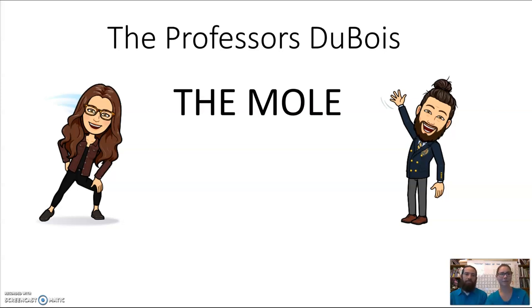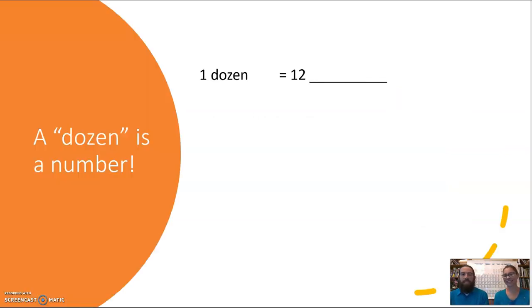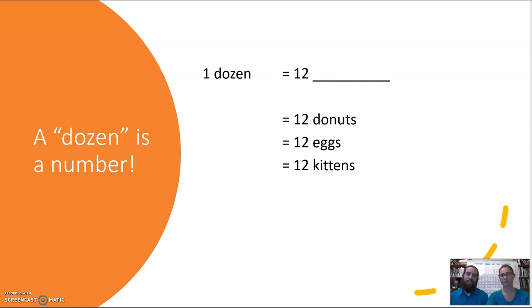A mole is a number, just any old number, much like a dozen. So we use the term dozen to represent 12. There's lots of examples where we might use a dozen. We've got a few for you here: dozen donuts, dozen eggs, dozen kittens. That's a good time. So this word dozen is actually a number and the mole is very similar.